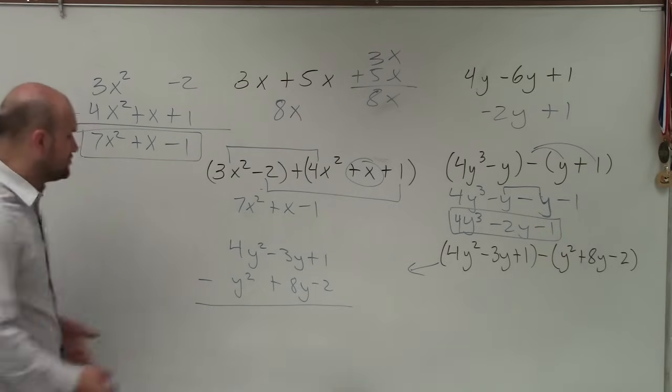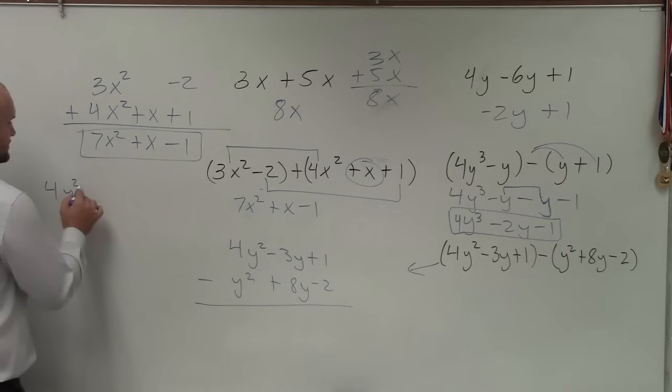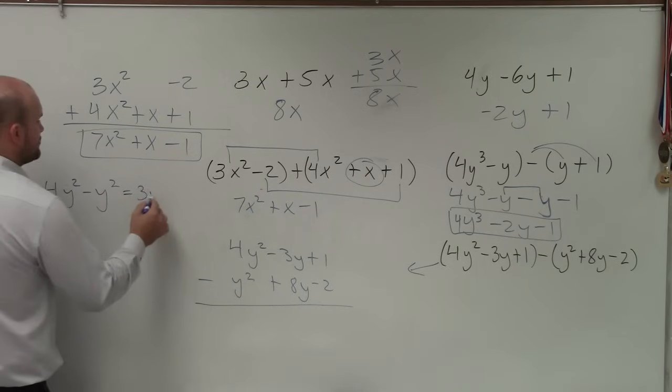So 4y squared minus 3y. 4y squared. I'm sorry, minus y squared. OK, that's just 3y squared.